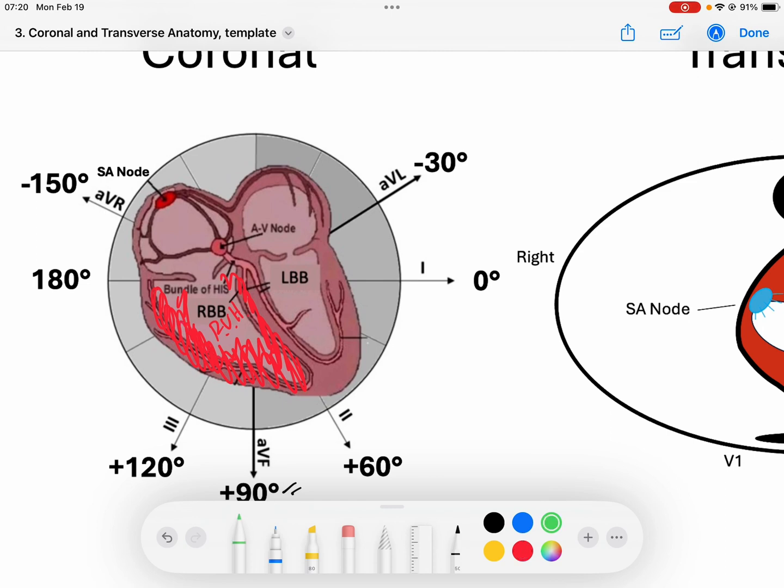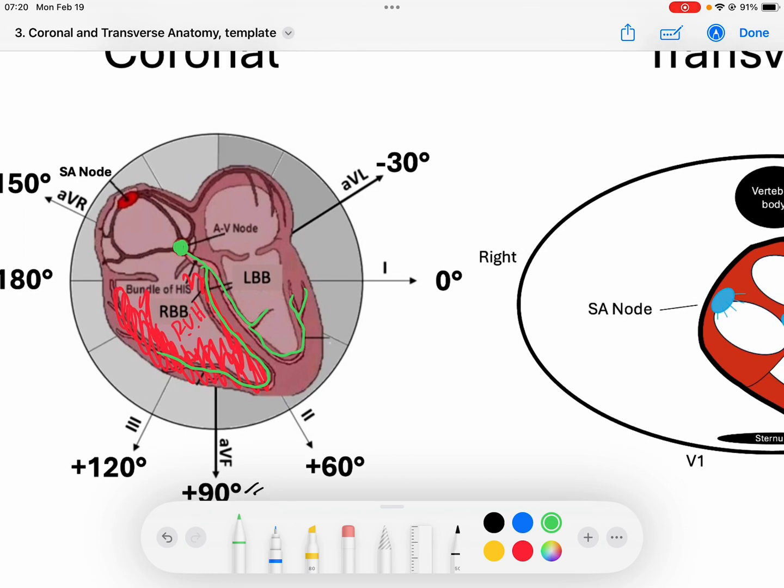Now when the AV node takes that signal and sends it down to His Purkinje system, we still have a functional His Purkinje system. But look what happens - we get forces that are starting to be drawn towards the right ventricle. We get an axis of depolarization that is starting to head towards the right ventricle versus the left.